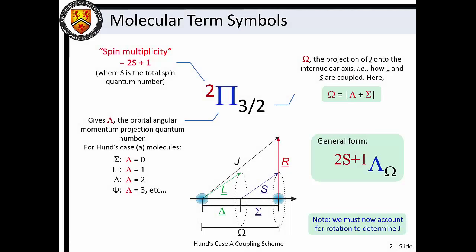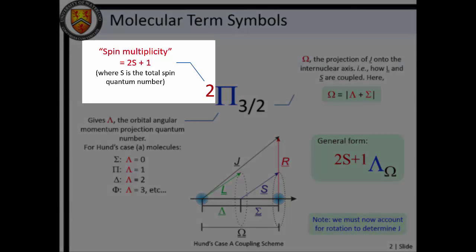Like atomic term symbols, molecular term symbols provide a succinct notation for summarizing the angular momenta of a molecular system. The superscript gives the spin multiplicity, which is equal to 2S plus 1, where S is the total spin angular momentum quantum number.